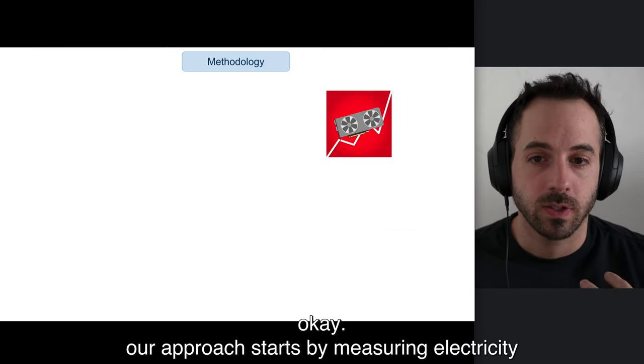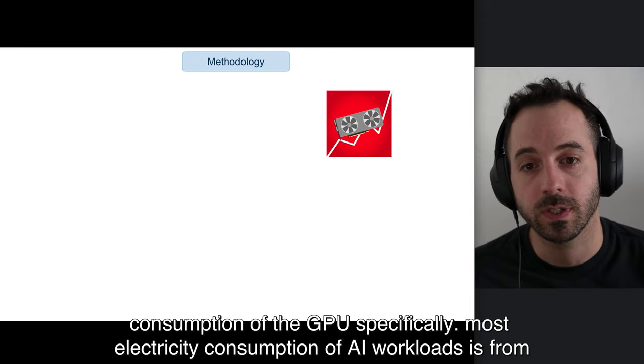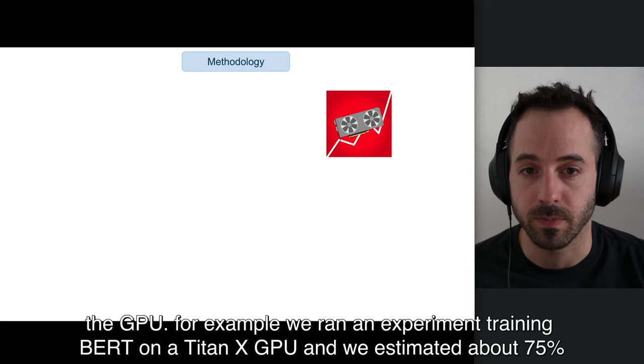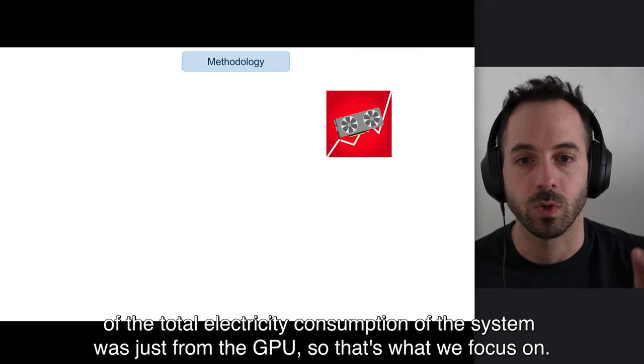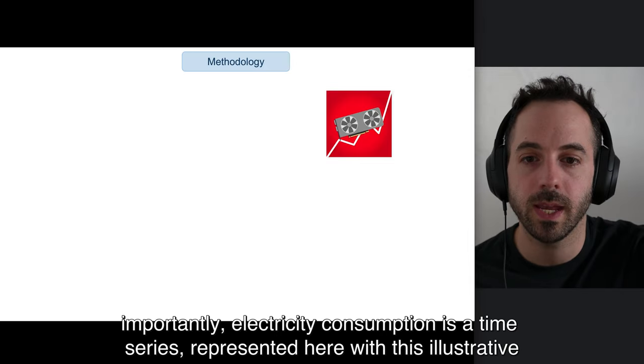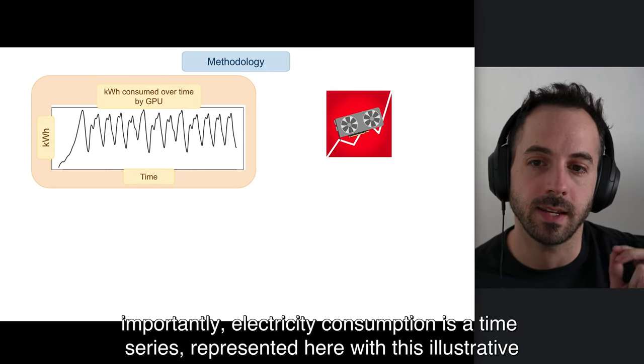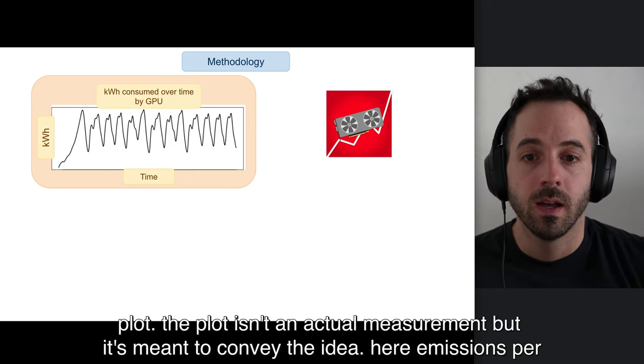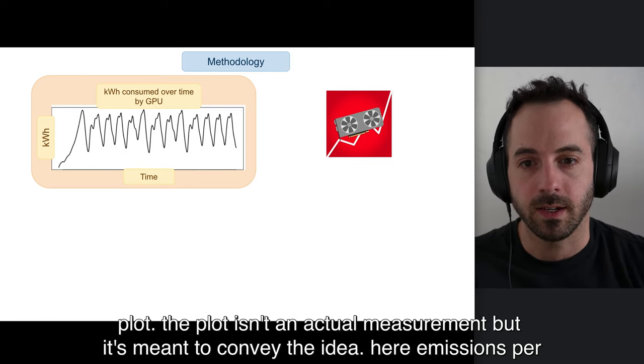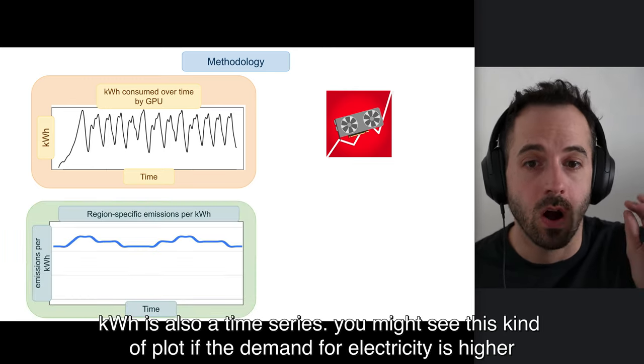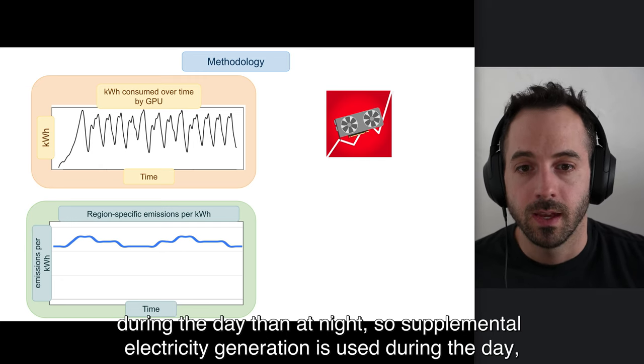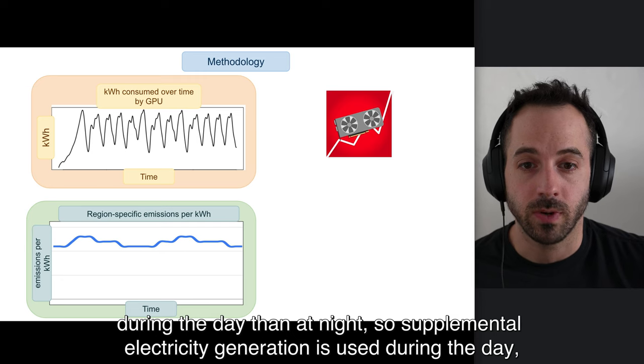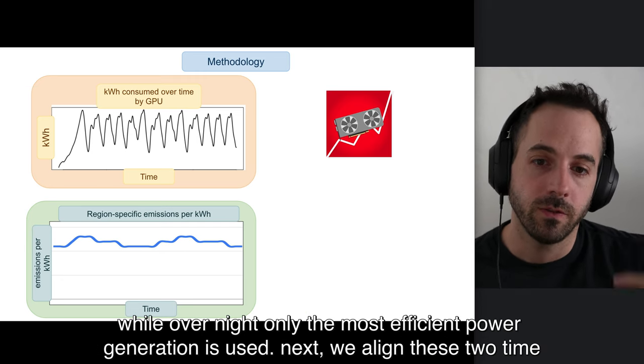Our approach starts by measuring electricity consumption of the GPU specifically. Most electricity consumption of AI workloads is from the GPU. For example, we ran an experiment training BERT on a Titan X GPU, and we estimated about 75% of the total electricity consumption of the system was just from the GPU. So that's what we focus on. Importantly, electricity consumption is a time series, represented here with this illustrative plot. Emissions per kilowatt hour are also a time series. You might see this kind of plot if the demand for electricity is higher during the day than at night, so supplemental electricity generation is used during the day, while overnight only the most efficient power generation is used.